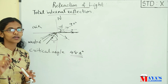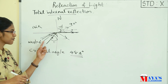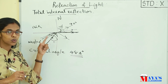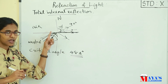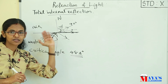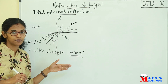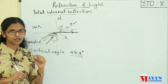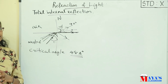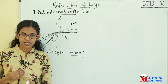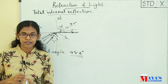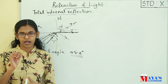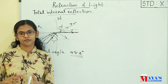That phenomenon is known as Total Internal Reflection. It means that if a ray of light travels from a denser medium to a rarer medium and the angle of incidence is greater than the critical angle, then the ray will be reflected back to the same medium. That phenomenon is known as Total Internal Reflection. It is a very important one.